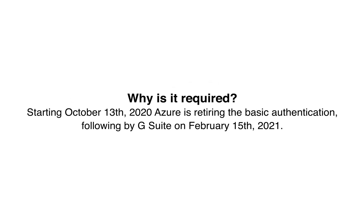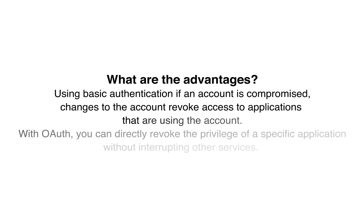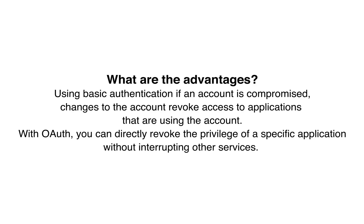Why is it required? Starting on October 13, 2020, Azure AD is retiring their basic authentication, followed by G Suite on February 15, 2021. Using basic authentication, if an account is compromised, changes to the account revoke access to applications that are using the account. With OAuth, you can directly revoke the privilege of a specific application without interrupting other services.